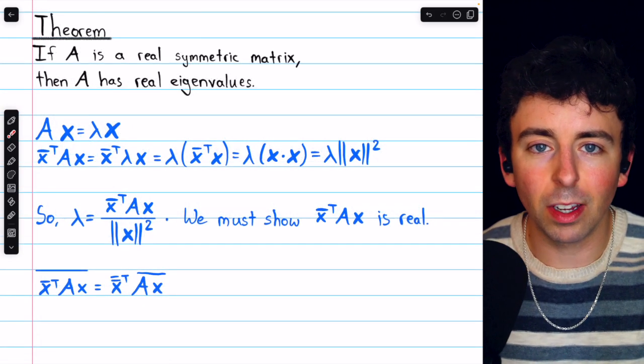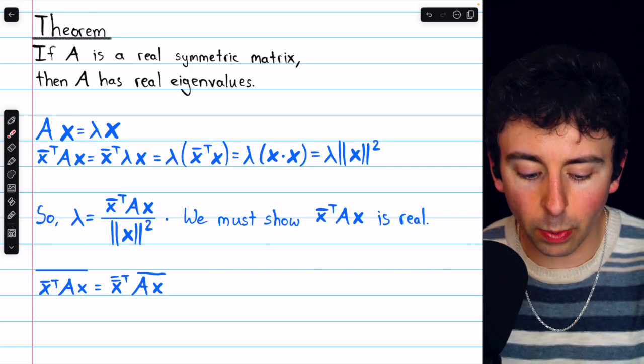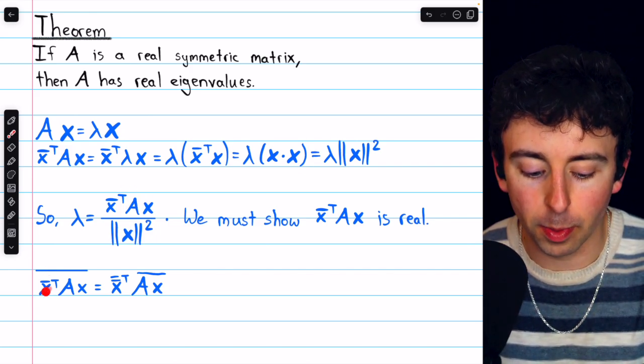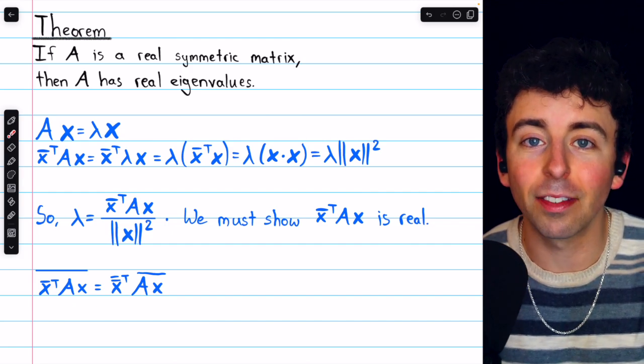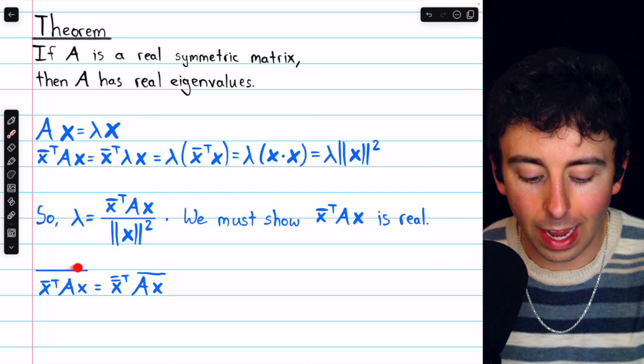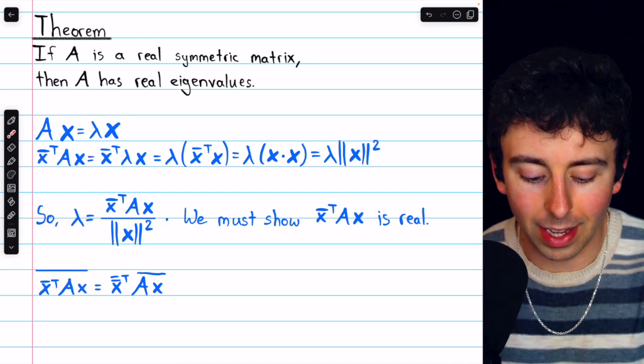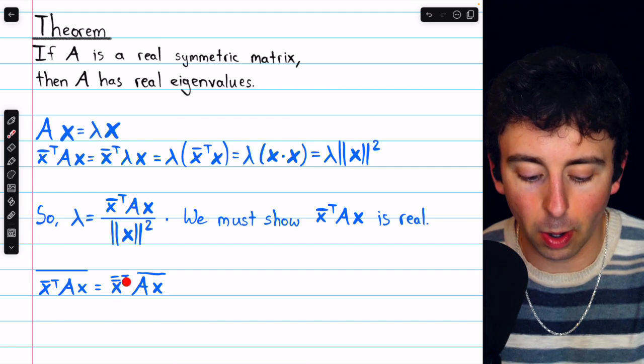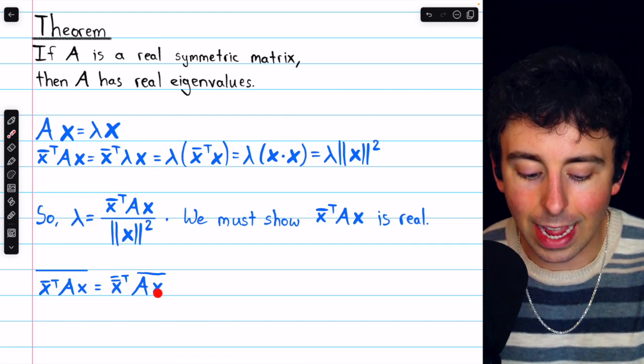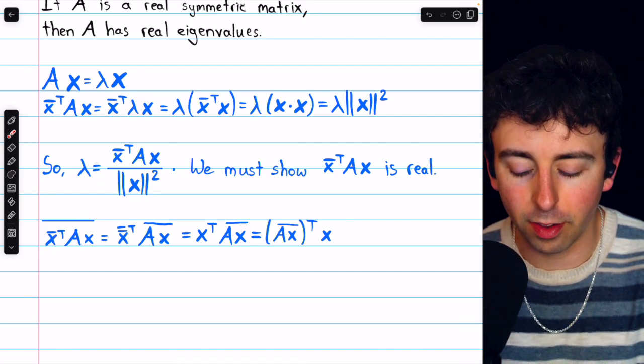And like we said a moment ago, the conjugate of something doesn't change it if it's real. So we're going to take the conjugate of this numerator and show that it actually has no effect, hence the numerator must be real. So taking the conjugate, we can take the conjugate of the individual parts, so that's x conjugate transpose conjugate, and Ax conjugate. That's basically just distributing the conjugate across those terms.